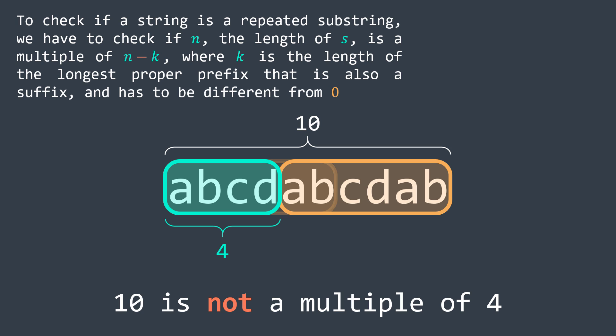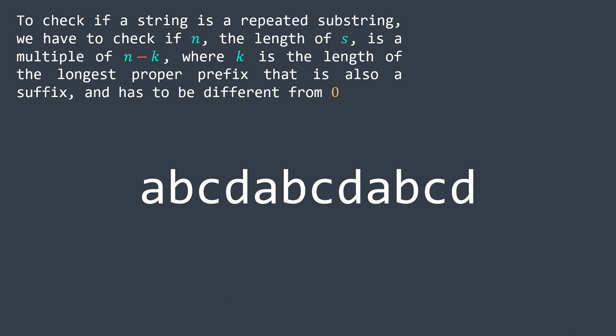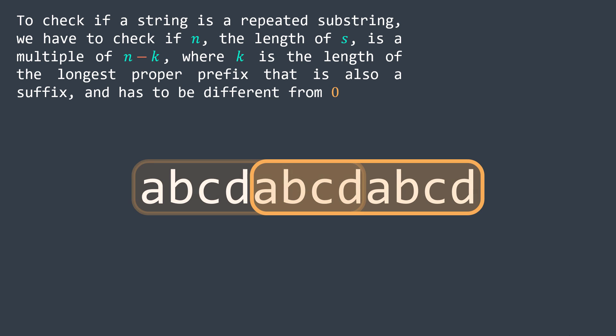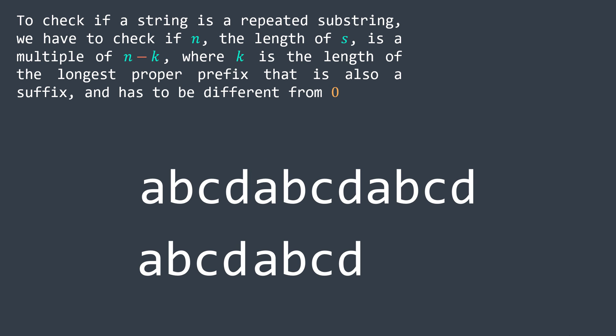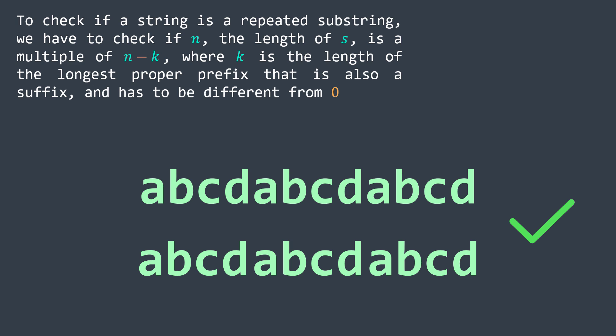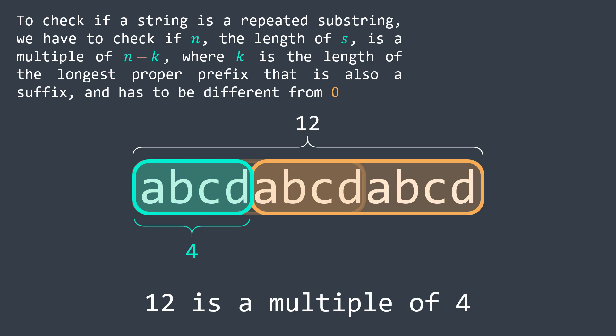Here's an example where it works: for ABCDABCDABCD, the longest proper prefix suffix is ABCDABCD and the remaining part is ABCD. Repeating ABCD three times, we reach the end of s and they match — so s is a repeated substring. This is because 12 (the length of s) is a multiple of 12 minus 8, which is 4 — the length of the substring outside the longest proper prefix suffix. It must be a multiple because the number of repetitions is an integer.